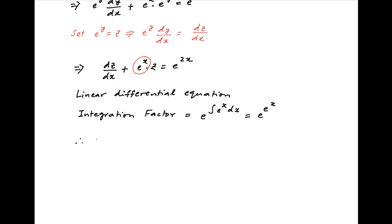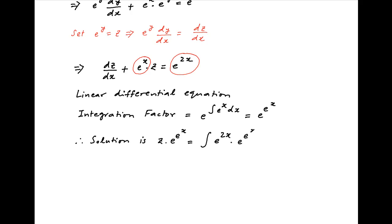Therefore, the solution of the given differential equation is given by z times the integration factor e raised to the power e raised to the power x, is equal to the integral of the right hand side of the differential equation, which is e raised to the power 2x times the integration factor e raised to the power e raised to the power x, dx, plus the constant of integration.